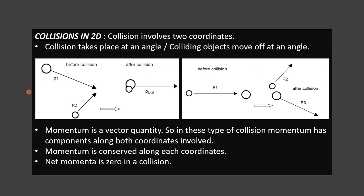In the first category, before collision the masses move from two different angles, and they collide and join together, moving off with the same momentum. In the second category, before collision they are moving along a straight line, but after collision they move off at an angle. One key thing to understand here: momentum is a vector quantity, so in this type of collision, momentum has components along both coordinates involved.